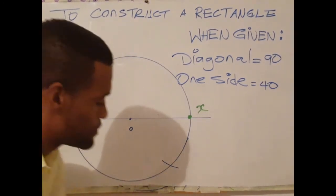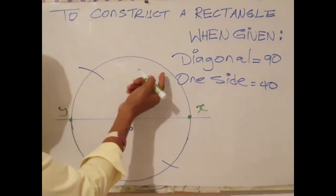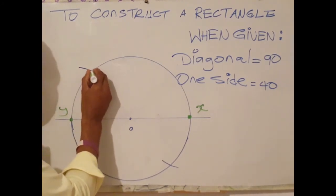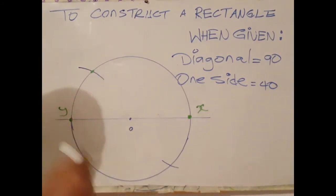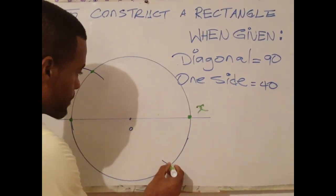At the point where the circle meets the arc, label that point. Do the same for the lower point.